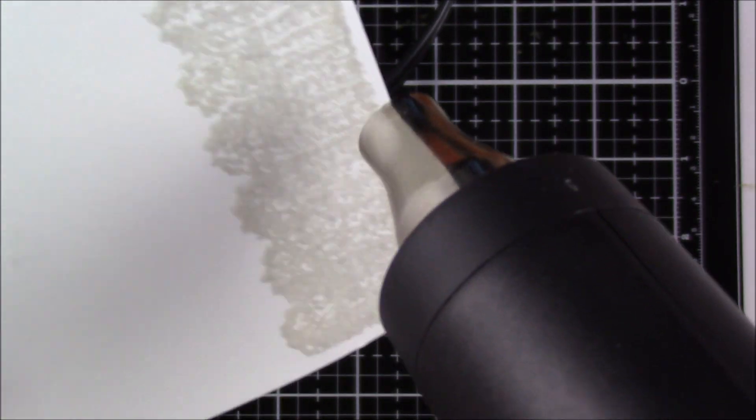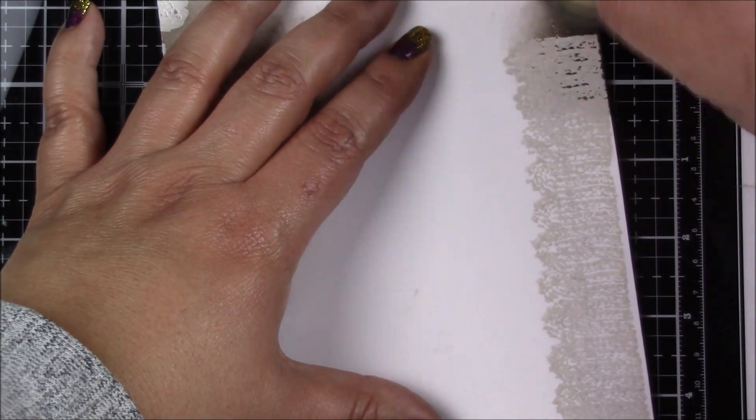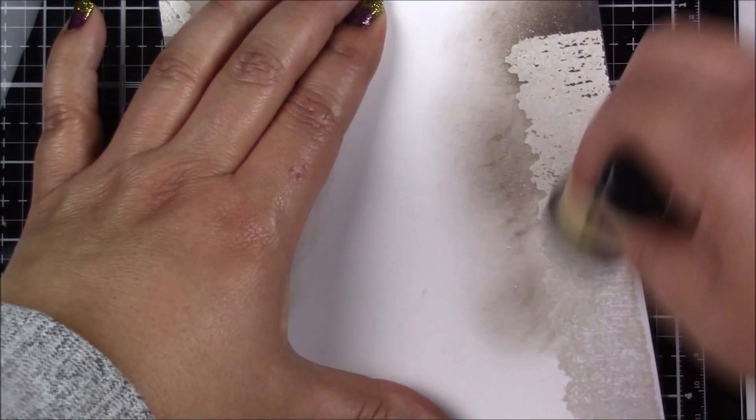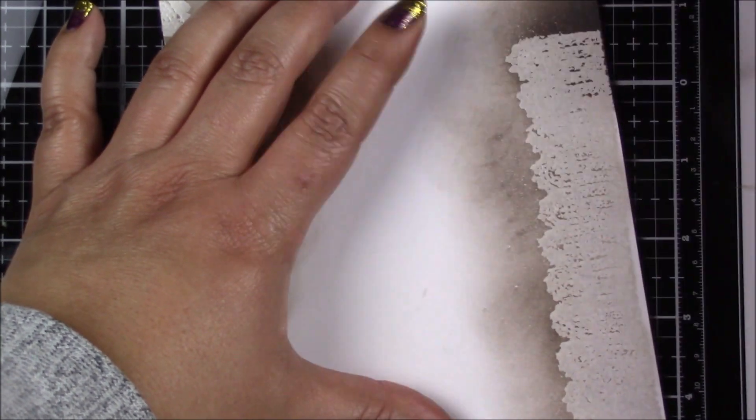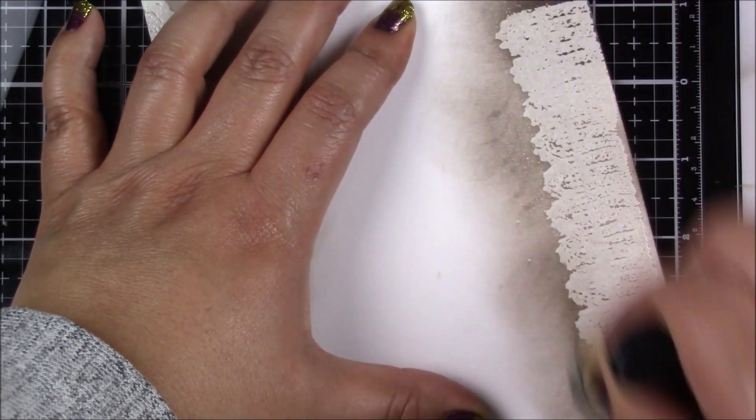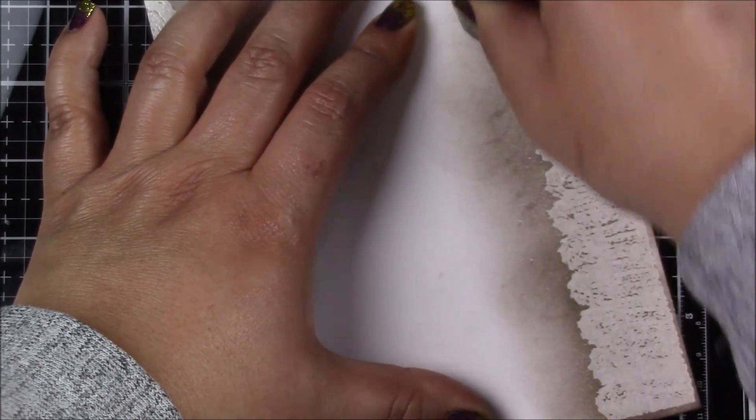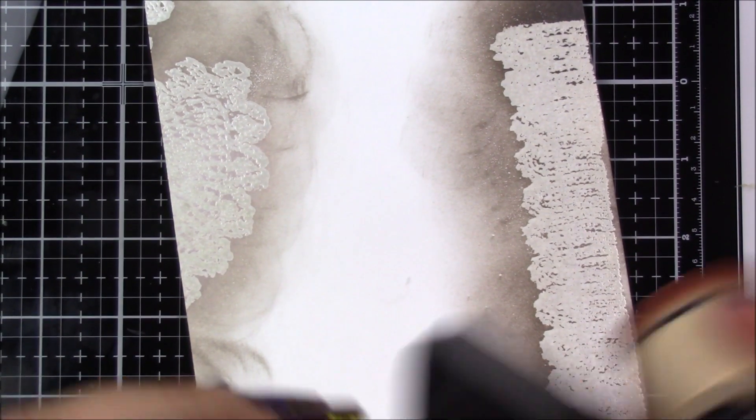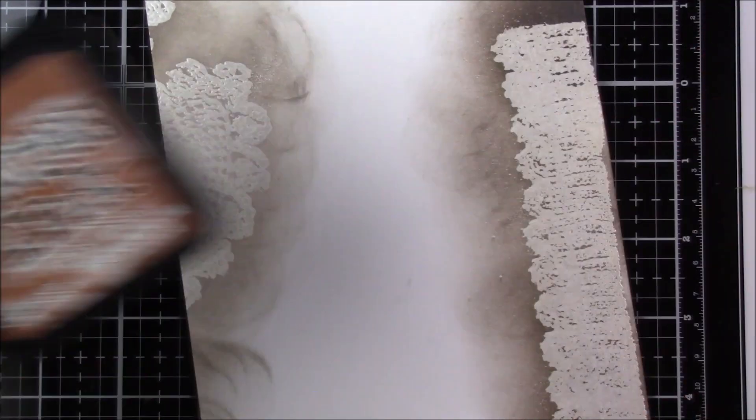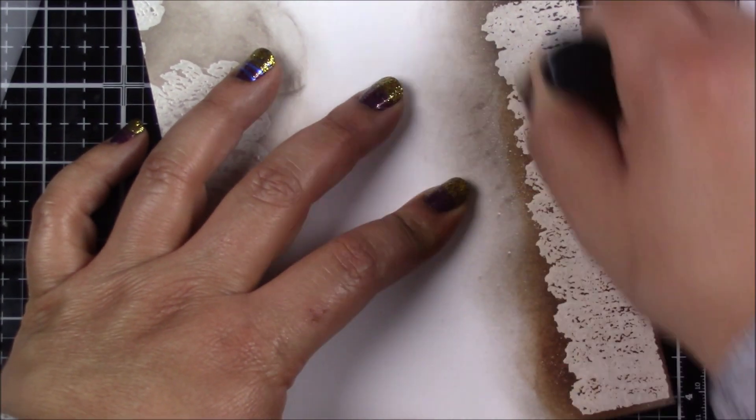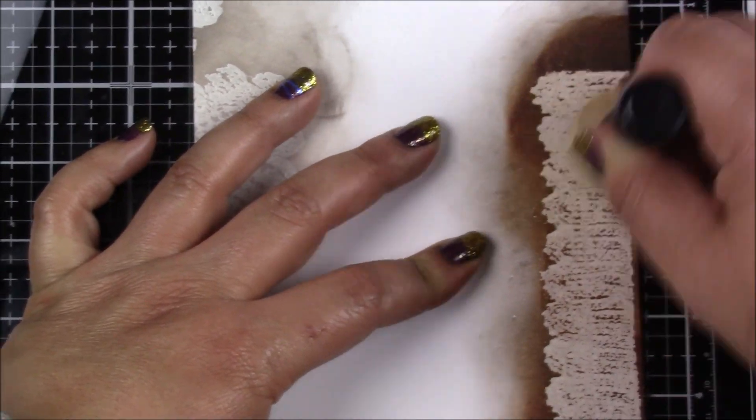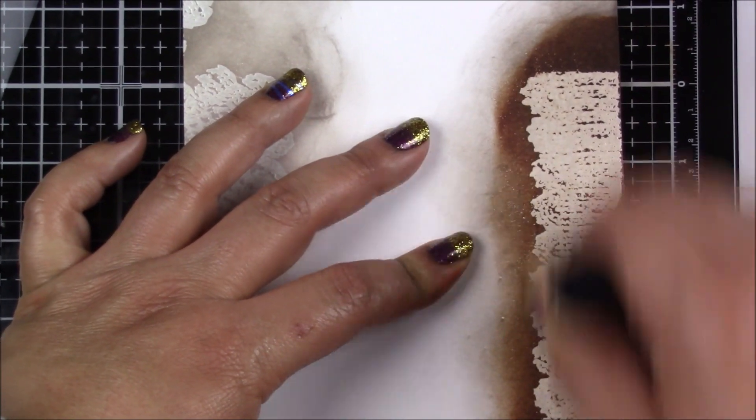After you heat emboss, then you add the same two inks as before—pumice stone and vintage photo—just to allow the image to pop even further. But don't throw away this paper because we will use it a little bit later for our sentiment, so you're creating the sentiment background as you work on this piece.